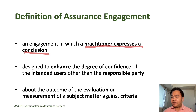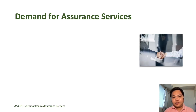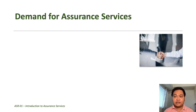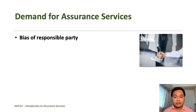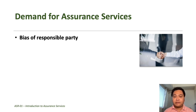In relation to this, why will the public ask for assurance services from a CPA practitioner? Here we will discuss the demand for assurance services. The first reason is the inherent bias of the information provider to include favorable information about their performance. That is why an independent third party will normally be called upon to validate the information before it is used by the users.